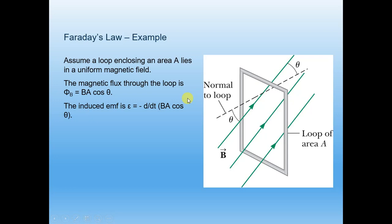Faraday used a simple mathematical result to explain the series of experiments he carried out on electromagnetic induction. Before stating his law, we must get familiar with the notation. The magnetic flux is denoted phi_B, defined the same way as electric flux in Chapter 1: Φ_B = BA cosθ, where θ is the angle between B and A, and A is the area of the loop.